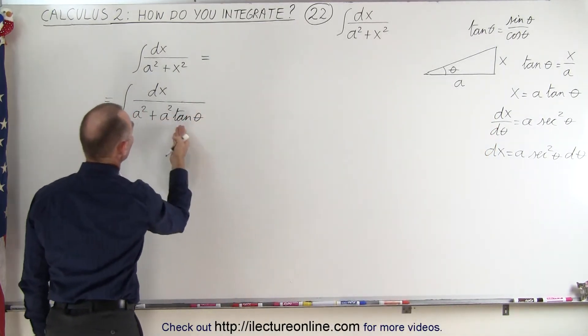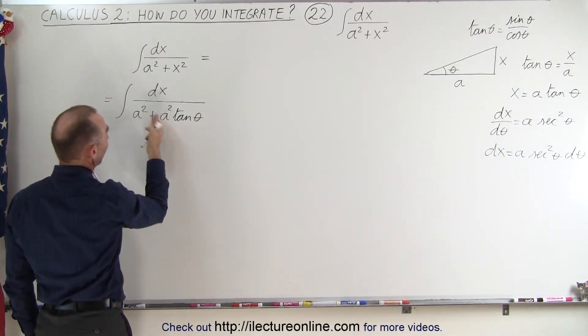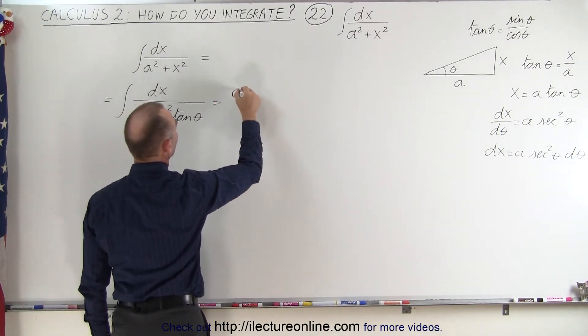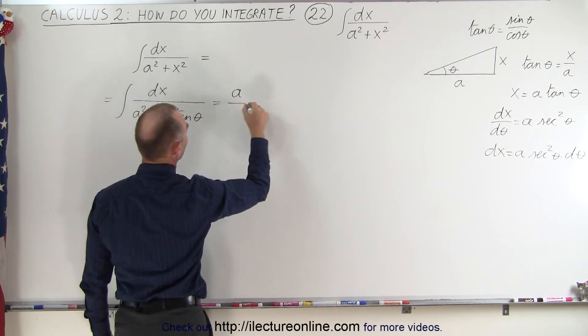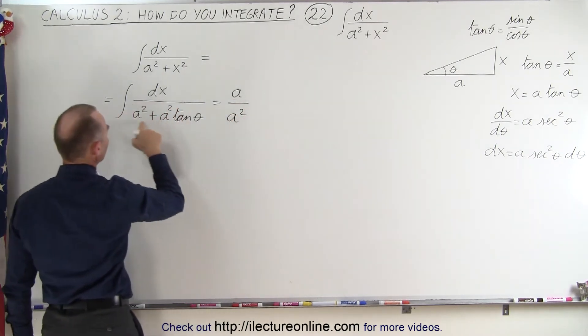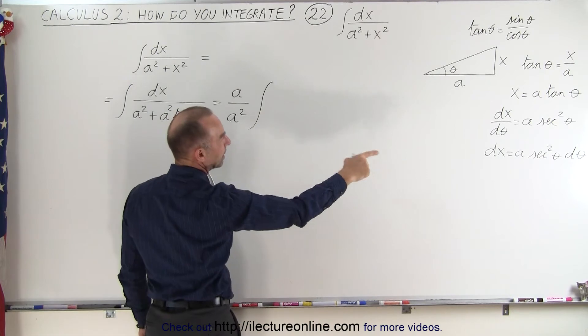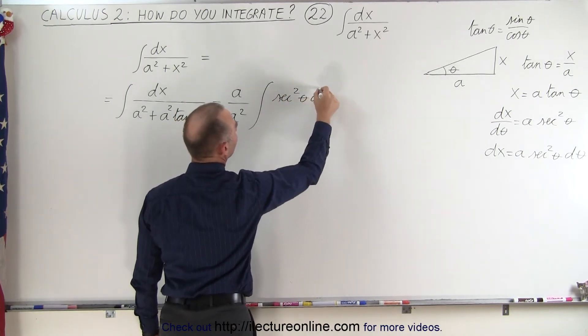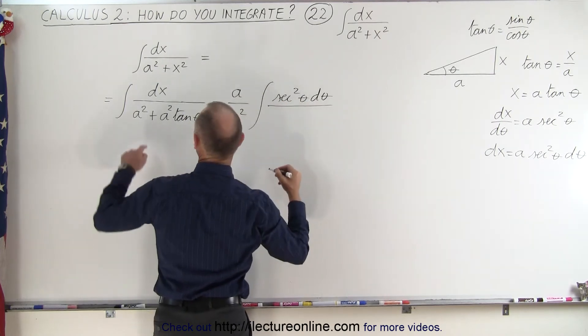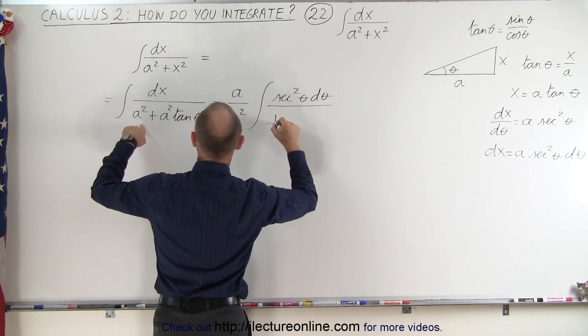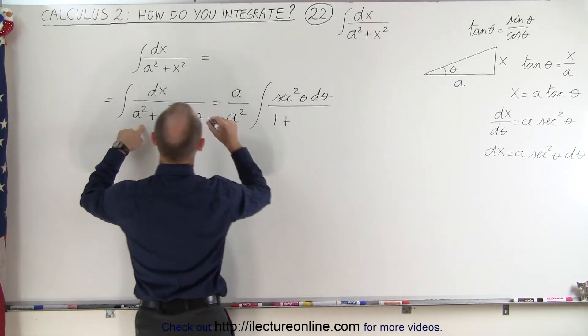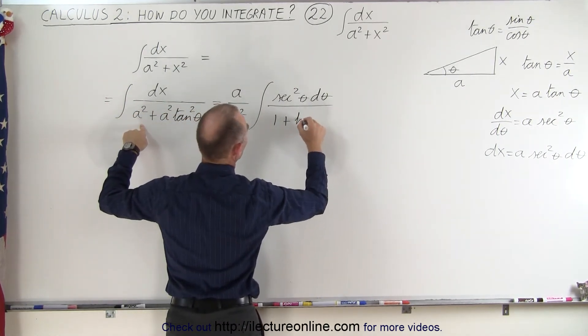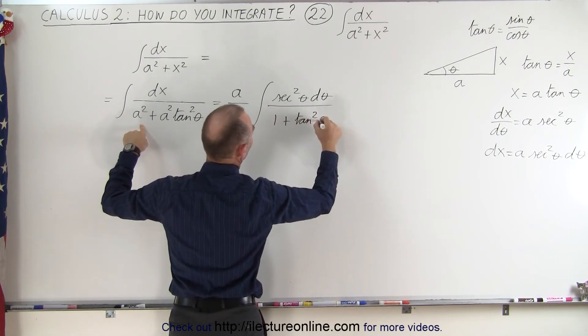And in the denominator we can actually factor out an a². So this becomes equal to - we're going to get an a divided by a² when we factor out the a² here - times the integral. And remaining we have sec²θ dθ in the numerator, and in the denominator we'll have 1 plus... oh, and I forgot the square here because I'm squaring this. So 1 + tan²θ.